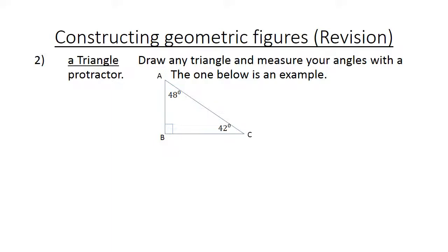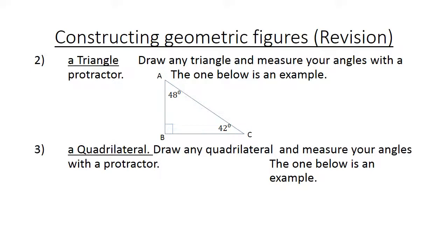A quadrilateral: Draw any quadrilateral and measure your angles with a protractor. The one below is an example: A, B, C, D. Angle BAD equals 120 degrees, angle BCD is 120 degrees, angle ABC is 60 degrees, and angle ADC is 60 degrees.